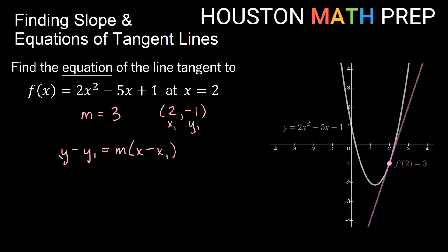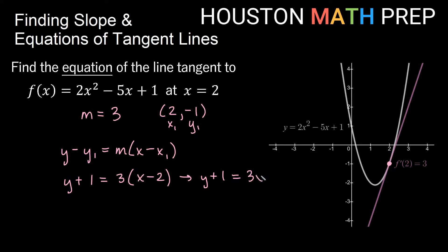Using point-slope form — y minus y1 equals m times x minus x1 — we plug in our values: y minus negative 1 gives y plus 1, equals 3 times (x minus 2). Distributing the 3 gives 3x minus 6, and subtracting 1 from both sides gives the equation of the tangent line: y = 3x - 7.